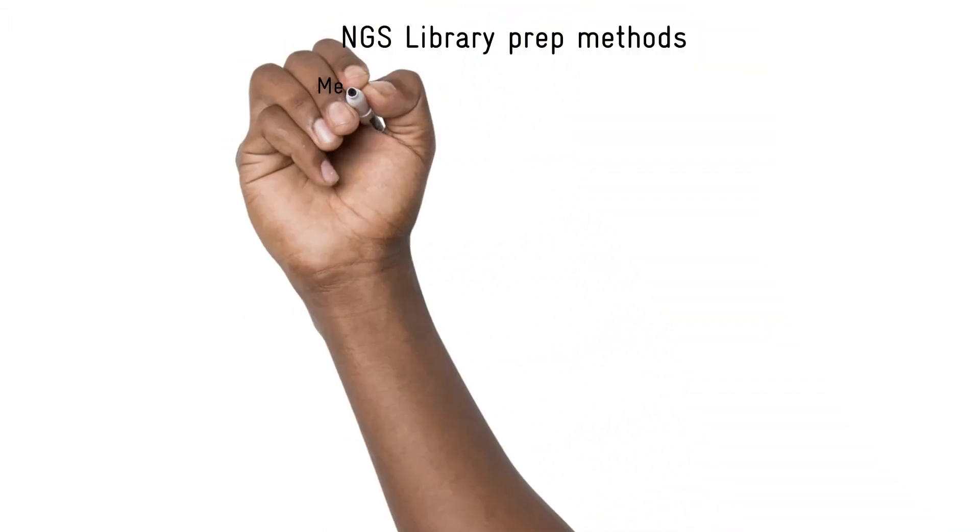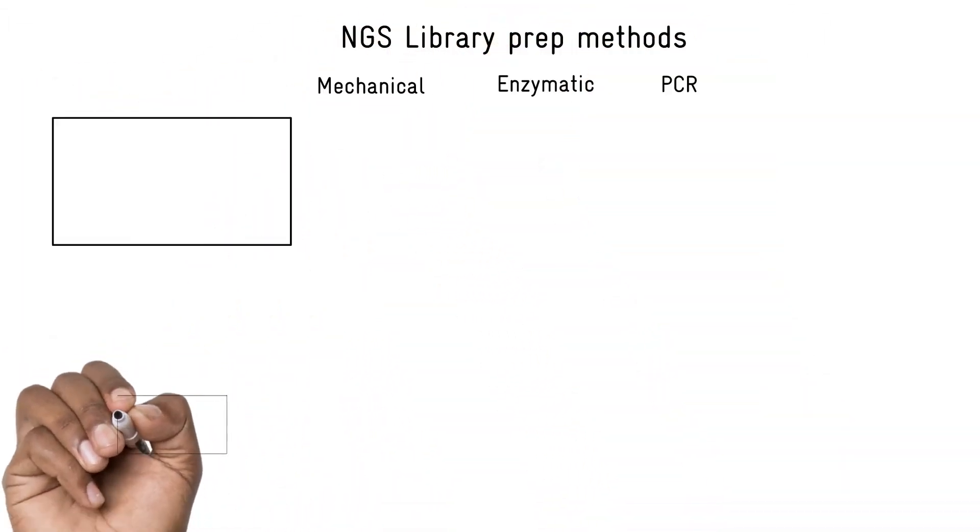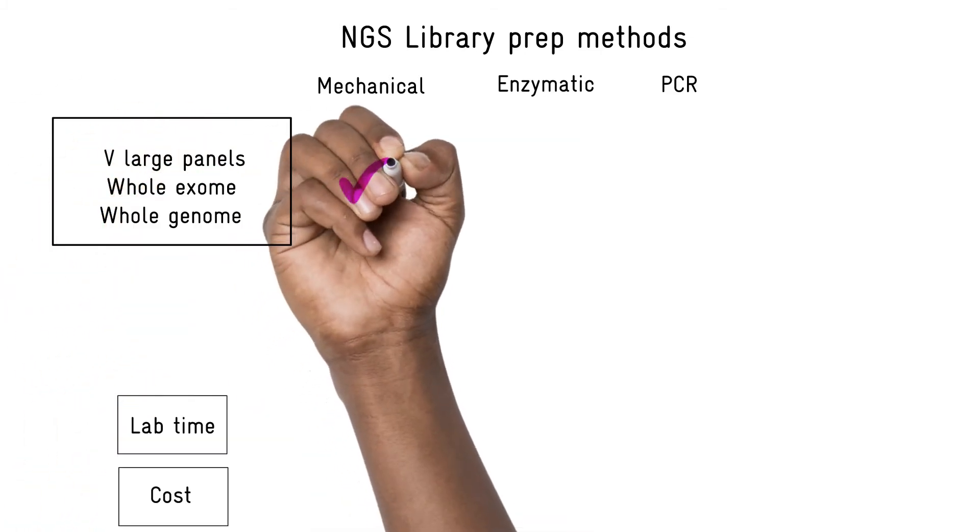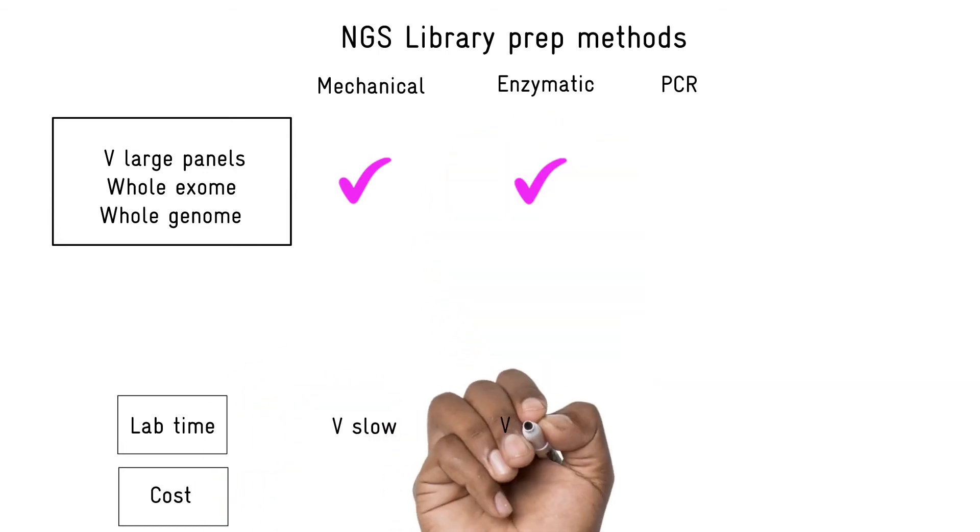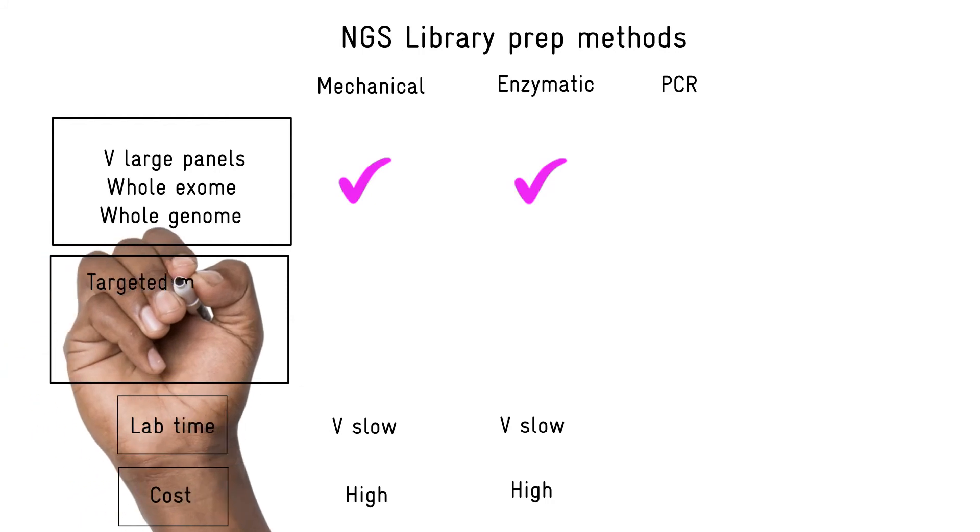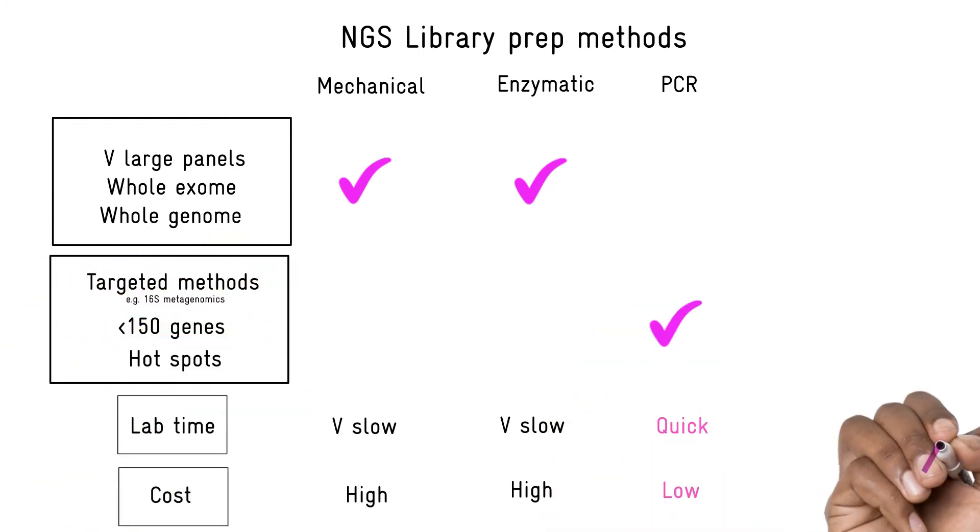So in summary, random fragmentation methods followed by the use of probes is best for sequencing large numbers of genes or whole exomes or whole genomes. The protocols tend to be long, complex, and can be expensive. Whereas PCR-based methods are best for targeted sequencing. They're simpler, faster, and more cost-effective.